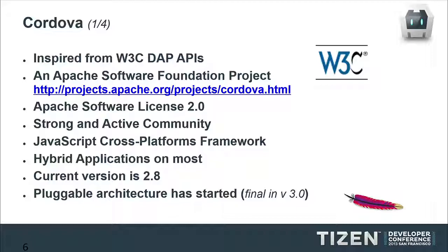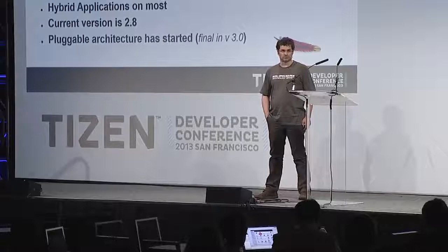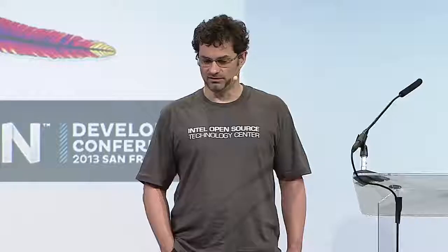We have a very strong and active community of about 40 committers — committers are maintainers in the Apache Software Foundation. We can develop hybrid applications on most supported platforms. The current version at the end of the month will be 2.8; currently 2.7 is downloadable. A pluggable architecture is being developed and should be finalized in version 3.